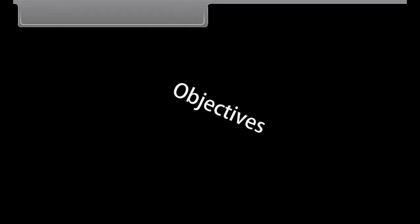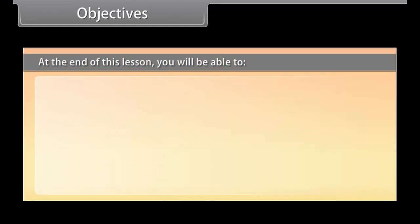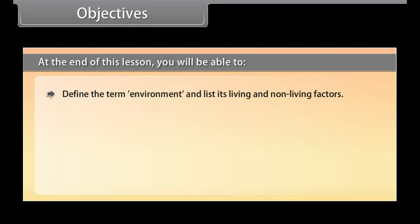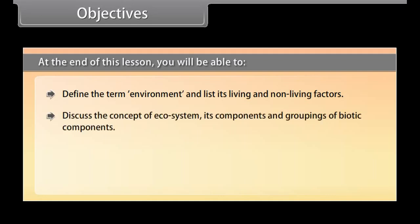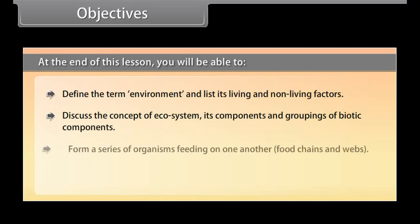Objectives. At the end of this lesson, you will be able to: define the term environment and list its living and non-living factors; discuss the concept of ecosystem, its components and groupings of biotic components; form a series of organisms feeding on one another — food chains and webs; and elaborate on how human-made activities influence our environment.